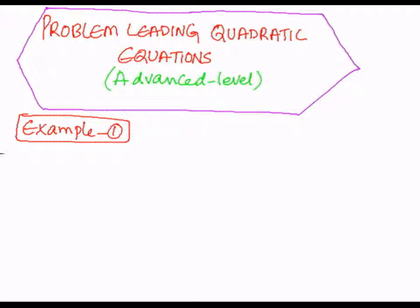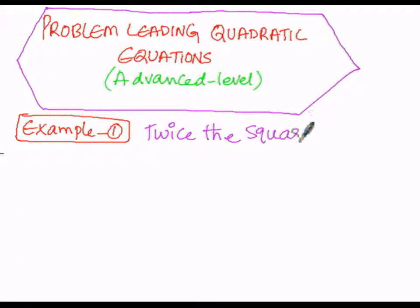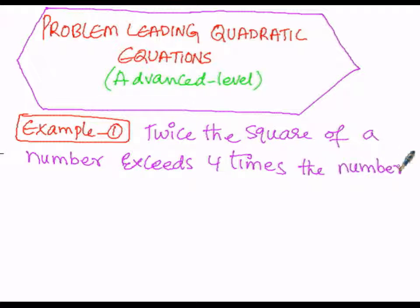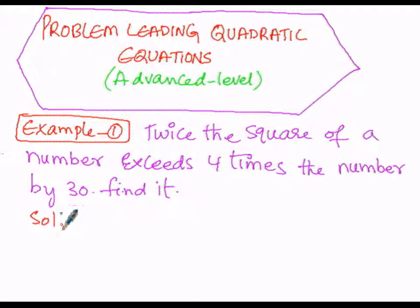The problem states: twice the square of a number exceeds 4 times the number by 30. We need to find that number. Solution starts now.